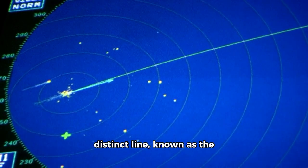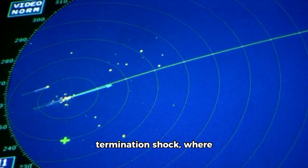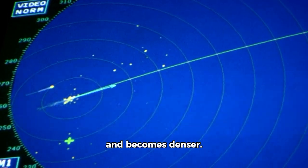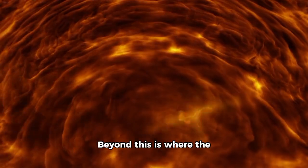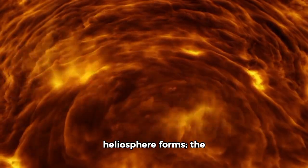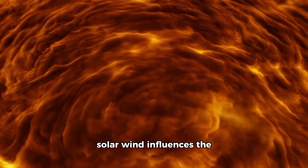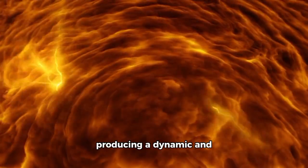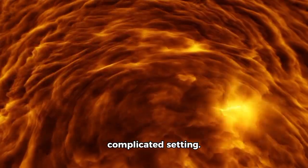The spacecraft revealed a distinct line, known as the termination shock, where the solar wind slows down and becomes denser. Beyond this is where the heliosphere forms. The solar wind influences the interstellar medium, producing a dynamic and complicated setting.